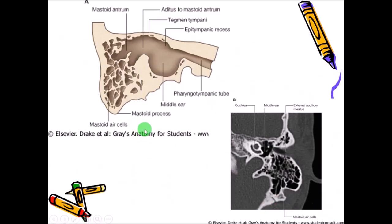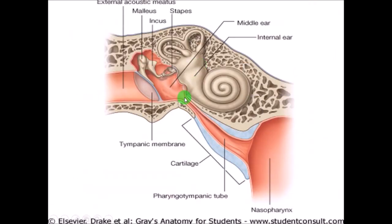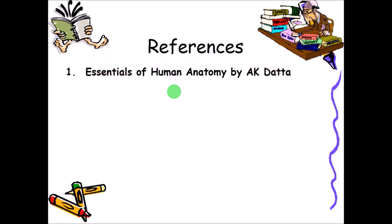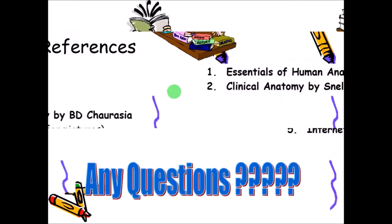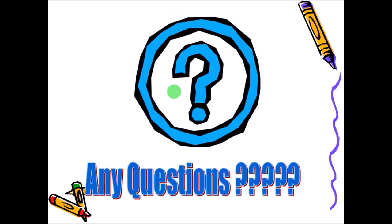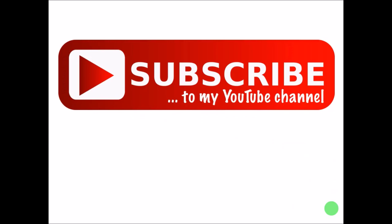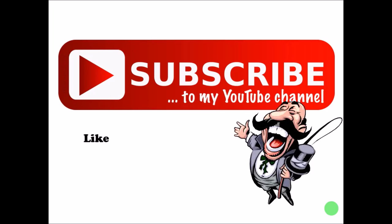The auditory tube, also called the pharyngotympanic tube or Eustachian tube, communicates the middle ear with the nasopharynx, allowing infections to easily transmit to the middle ear. This concludes the study of the external and middle ear. If you have any questions, please post them and I will try to answer. Thank you very much.